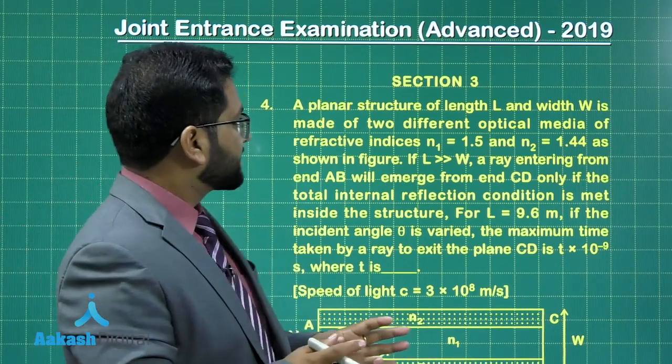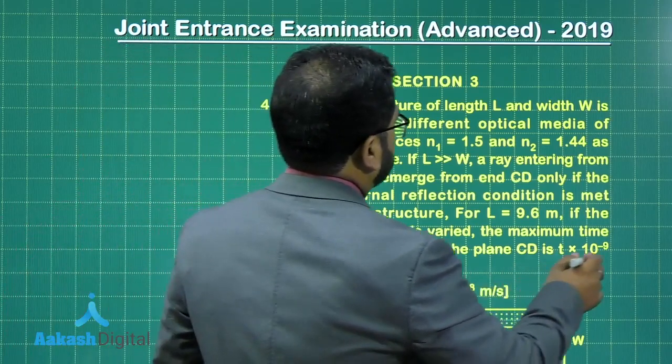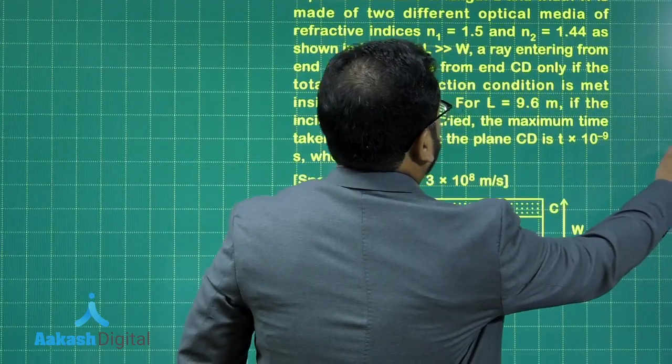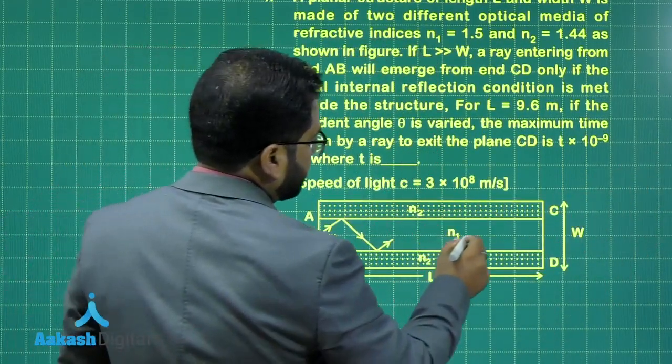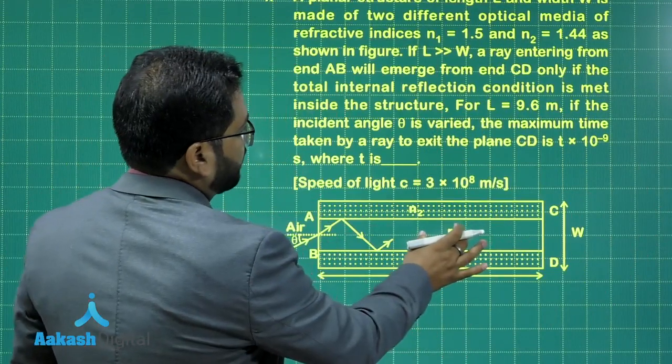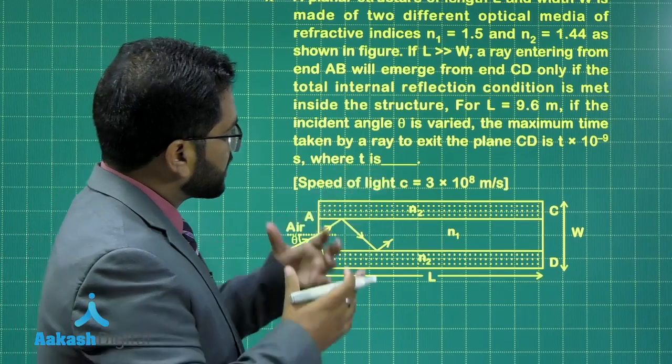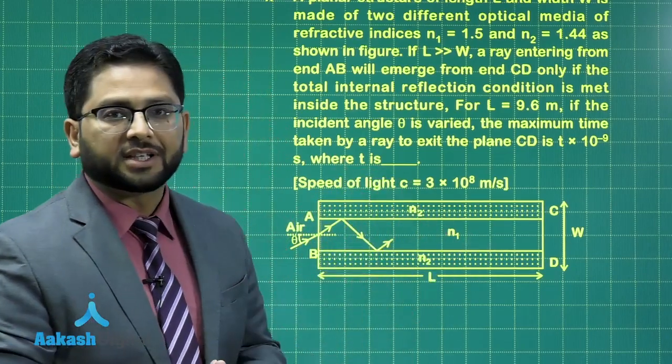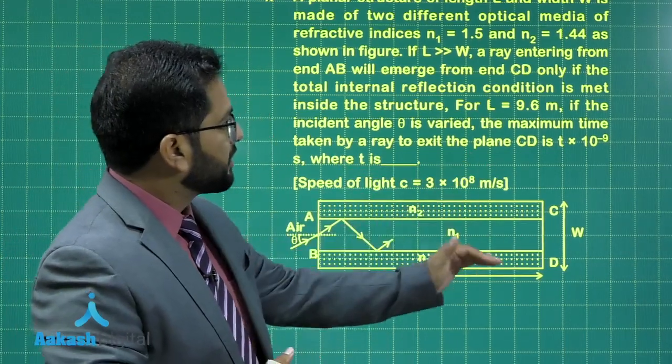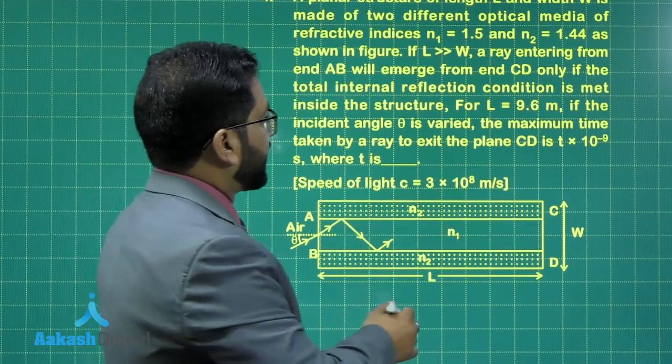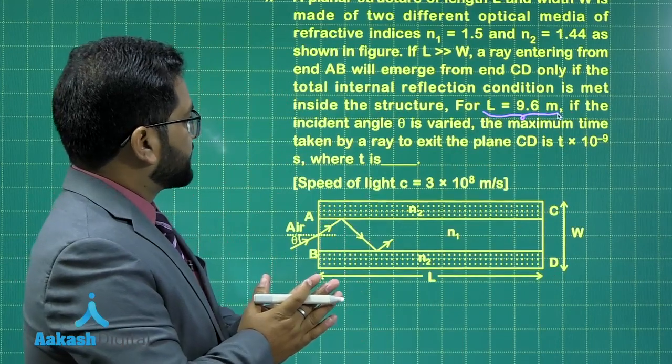Let's see what it is. It says that a planar structure of length L and width W is made of two different optical media. And N1 has been given as 1.5, the refractive index of this is 1.5, another is 1.44. So clearly it's a condition given to have a total internal reflection. And then it says capital L is very much greater than this, and even the value of capital L has been given as 9.6. Now what is the question saying?